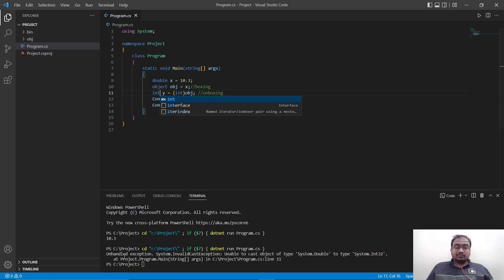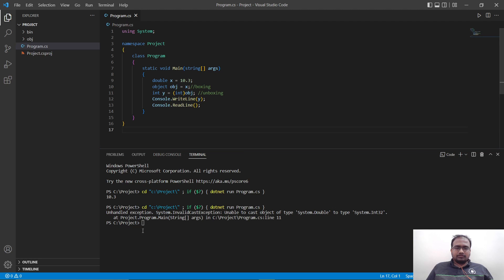As you can see, it is giving us an unhandled exception. That is invalid cast exception. Now, to get around that, we need to double cast it.